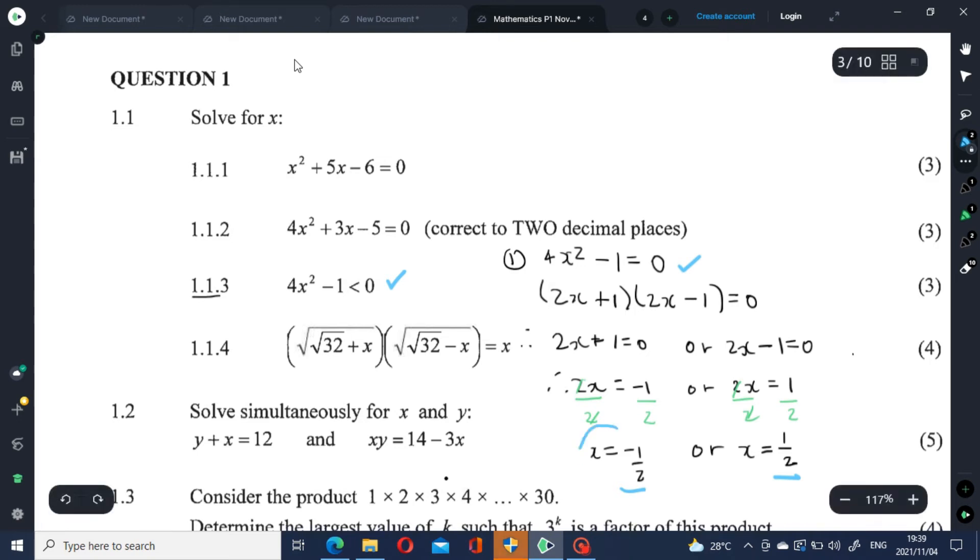And these solutions help us with the second part of solving the inequality. Let's use these solutions to draw a number line: 0, negative half, and positive half.